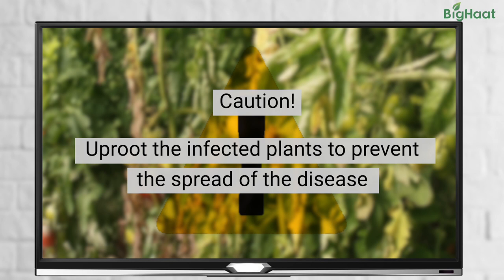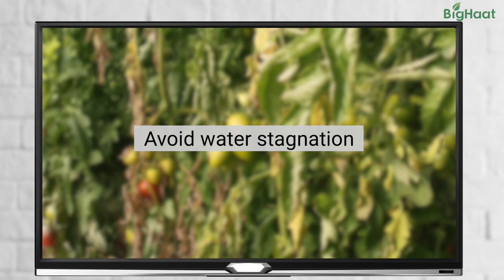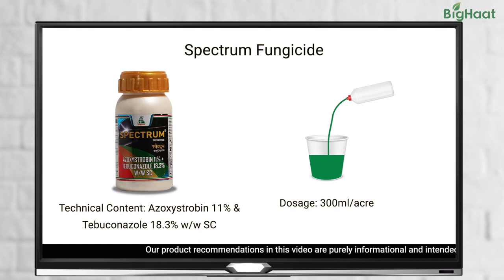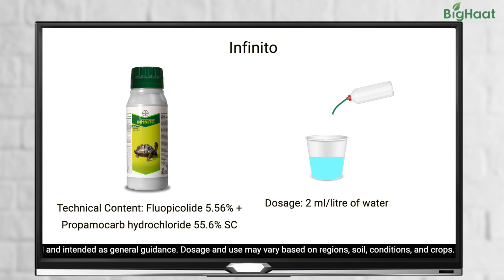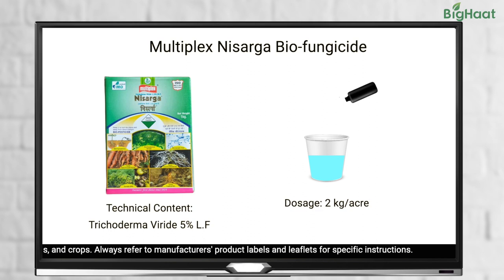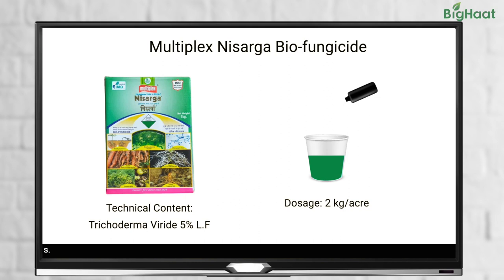To avoid mass spread of the disease, uproot infected plants from the field. Avoid high-nitrogen fertilizers and water stagnation. In case of an outbreak, trench the affected area with Spectrum fungicide at 300 ml per acre, or Infinito at 2 ml per liter of water. Alternatively, use Multiplex Niserga bio-fungicide containing Trichoderma viridae at 2 kg per acre, then irrigate the field.